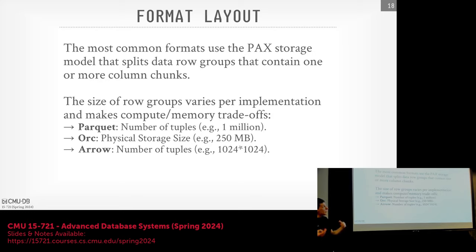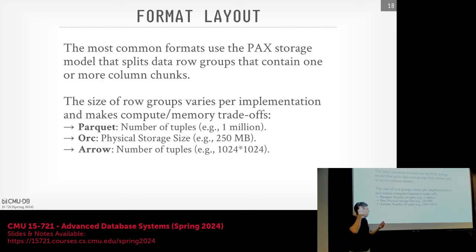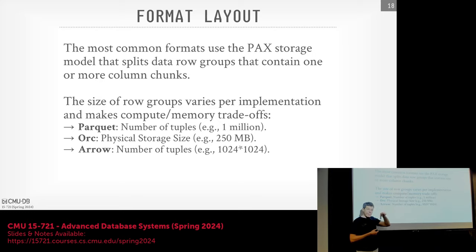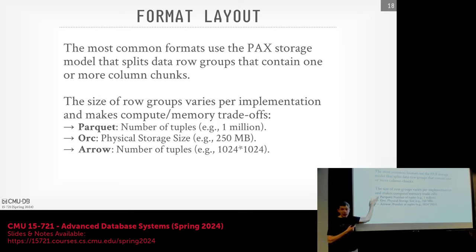The format we've mostly talked about is PAX — we'll split data into row groups that contain one or more column chunks. The question is what size row group to use. For Parquet, they use just the number of tuples and you can specify this when creating the file — like a million tuples or 10 million tuples — and it's always based on number of tuples. ORC takes a different approach, specifying it based on the size of the data, with a default of 250 megabytes. What are the pros and cons of each?